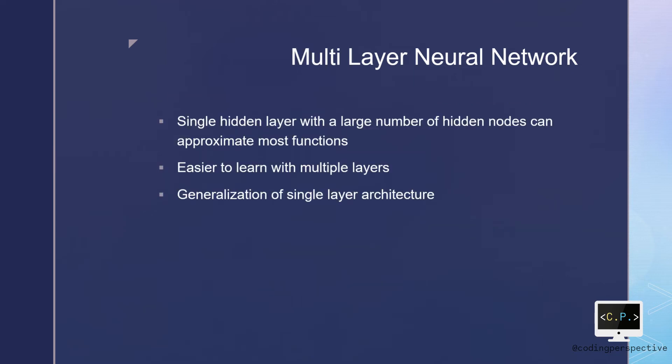Modern neural networks typically have more than one hidden layer and often many units per layer. In theory, a single hidden layer with a large number of units has the ability to approximate most functions.